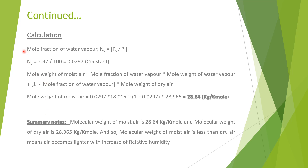Mole fraction of water vapor equals Pb divided by total pressure, which equals 0.0297. Molecular weight of moisture equals mole fraction of water vapor (0.0297) multiplied by molecular weight of water (18.015), plus (1 minus 0.0297) multiplied by molecular weight of dry air (28.965), which equals 28.64 kg per kmol. So the molecular weight of moisture is 28.64 kg per kmol, and molecular weight of dry air is 28.965 kg per kmol. This means molecular weight of moist air is lesser than dry air, meaning air becomes lighter with an increase in relative humidity.